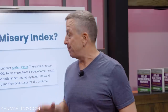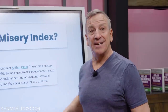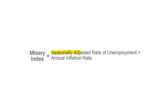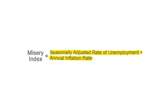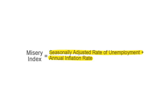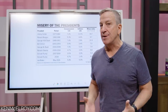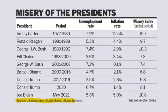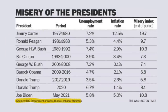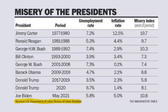So why is this important? Because this can determine elections. The misery index, or MI, is basically the seasonally adjusted rate of unemployment plus the annual inflation rate — MI equals U plus I. The information around the misery index is widely available on the Bureau of Labor Statistics and the US Department of Labor.